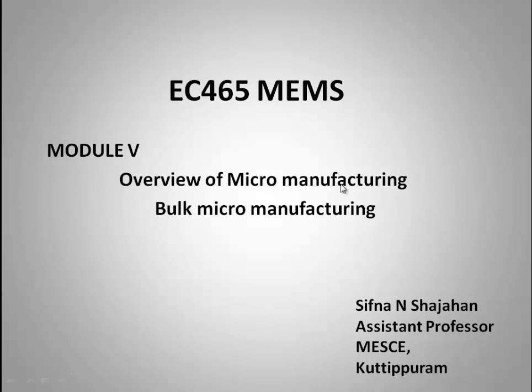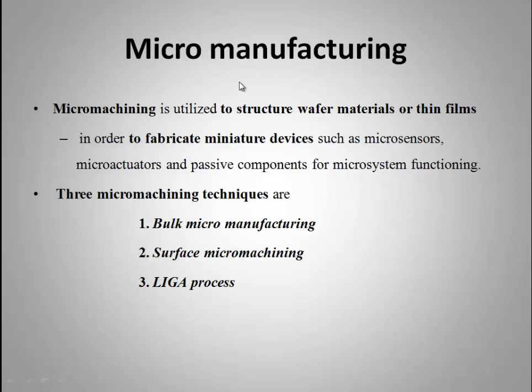Module 5: Overview of micro manufacturing. Bulk micro manufacturing, micro manufacturing, or micro machining is mainly utilized to structure wafer materials or thin films so that we can fabricate miniature structures such as micro sensors, micro actuators, or any other components. Usually one substrate material is used, and fabricating a device or structure within that substrate material is called micro machining.